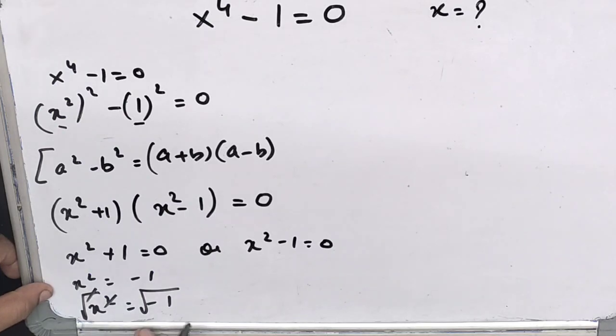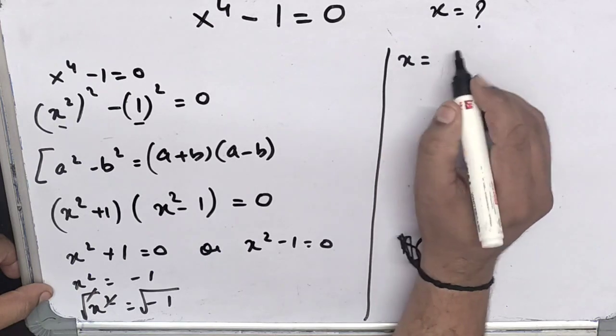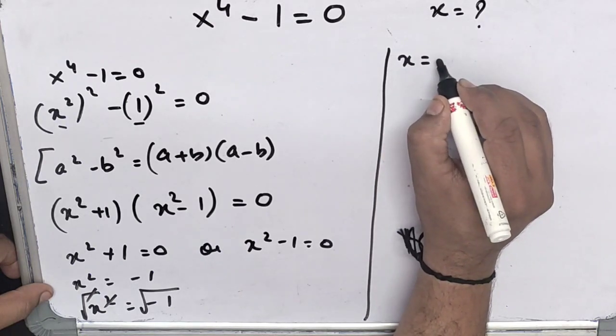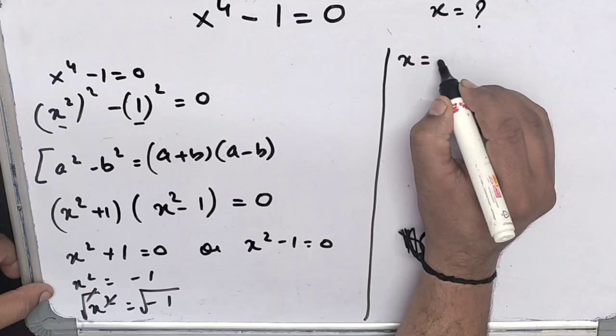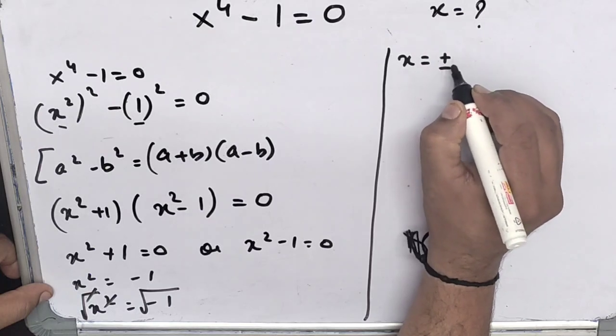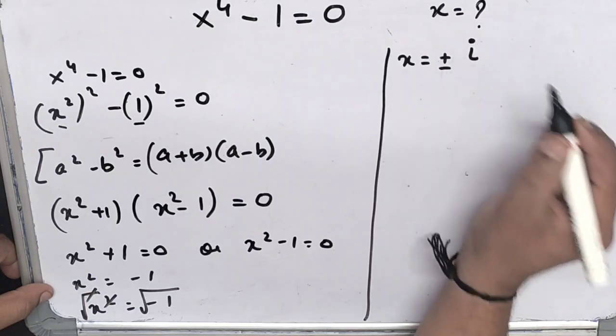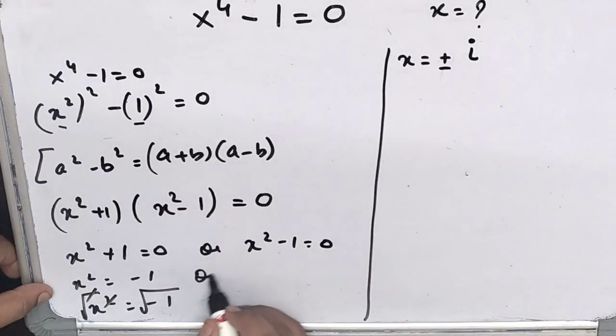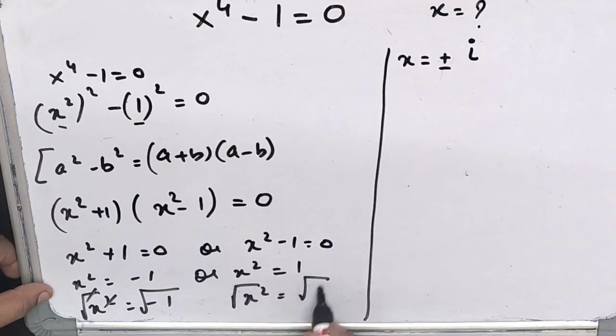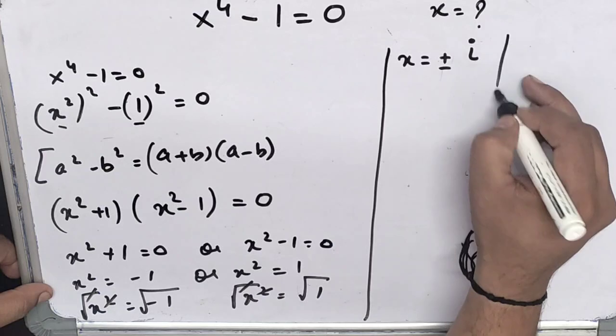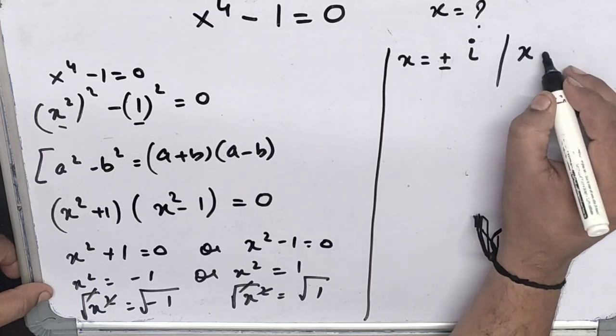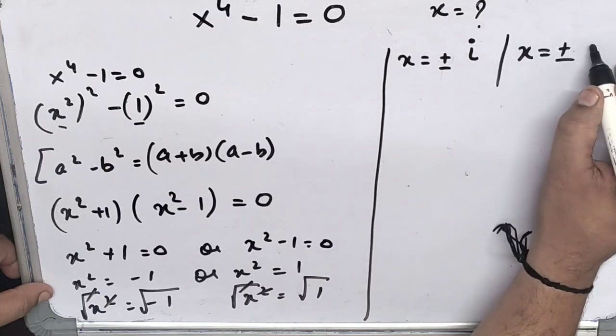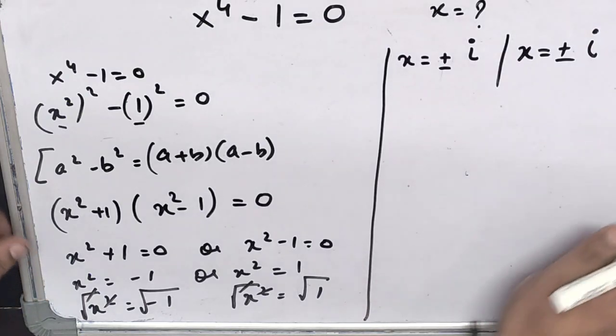So what we get: x equals to plus minus i. And in this case, x square equals to 1. Under root x square, under root 1. From here this got cancelled, x equals to plus minus 1.